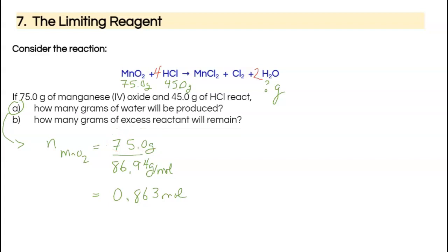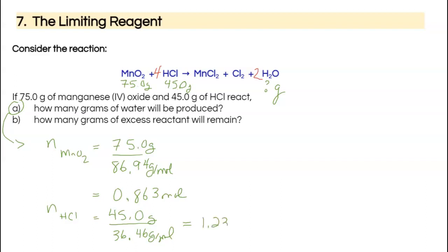I'll do the same for moles of HCl. I have 45 grams divided by the molar mass of HCl, which is 36.46 grams per mole from the periodic table. That gives me a value of 1.23 moles, to three significant digits.